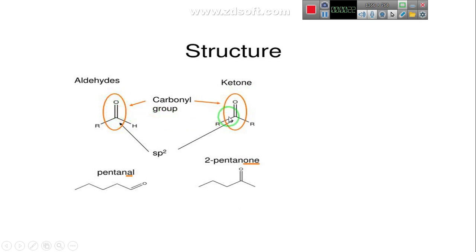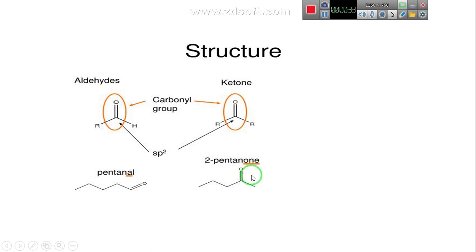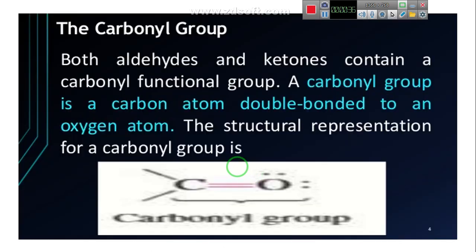Aldehyde ends with the suffix -AL, while ketone ends with the suffix -ONE. The carbonyl group, C double bonded with O, is present in both aldehydes and ketones. Both aldehydes and ketones are carbonyl compounds. You need to be able to identify the carbonyl group.